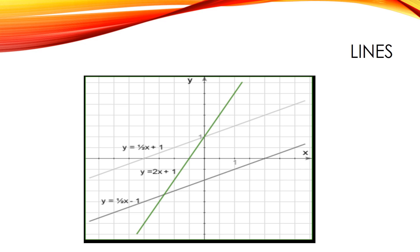It does not matter whether we are talking about a line, ray, or line segment — in all cases, any of the below methods will provide enough information to define the line exactly. The general form of a straight line is AX + BY + C = 0, where A, B, and C are arbitrary constants. This form includes all other forms as special cases.